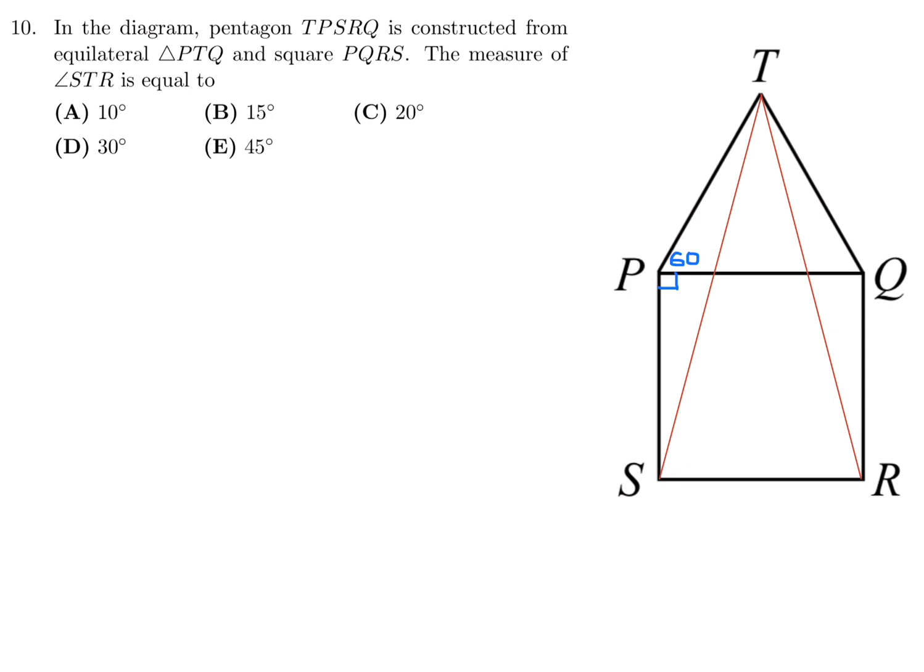So, since this is an equilateral triangle, these are all the same. And this, therefore, is the same as that, that, and that. So, this triangle right here is isosceles, PTS. So, that means this is the same as that in terms of the angles. This we have concluded is 150. So, 150 + 2x = 180, right? So, 2x = 30. x is, therefore, 15.